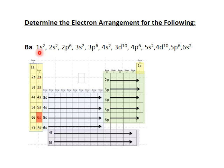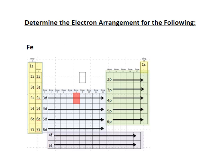For really large electron configurations, scientists use a shorthand: go to the previous noble gas, use its symbol in brackets, then write only the orbitals beyond it. For barium, counting back to the previous noble gas gives xenon, which represents everything through 5p. Then you just write 6s² beyond that.